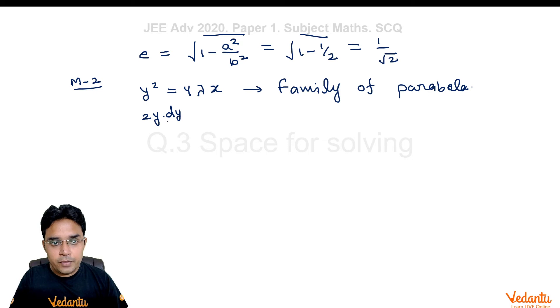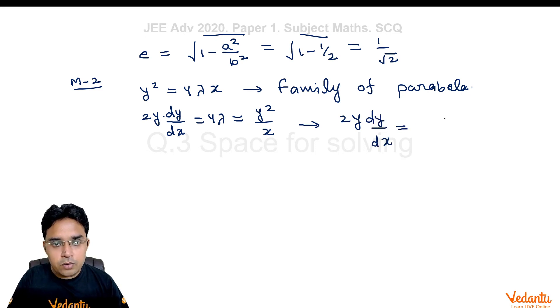So, 2y·dy/dx = 4λ and this will be y²/x. This gives us a differential equation 2y·dy/dx = y²/x. After simplification it will become dy/dx = y/2x.